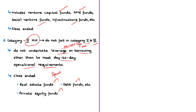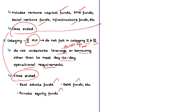A debt fund is an alternative investment fund which invests primarily in debt or debt securities of listed or unlisted investee companies according to the stated objectives of the fund. Don't forget that these funds are registered under Category 2. Since an AIF is a privately pooled investment vehicle, the amount contributed by investors shall not be utilized for the purpose of giving loans. Category 1 and Category 2 AIFs are required to be close-ended, meaning they have a predetermined limit — in this case, a minimum tenure of 3 years.